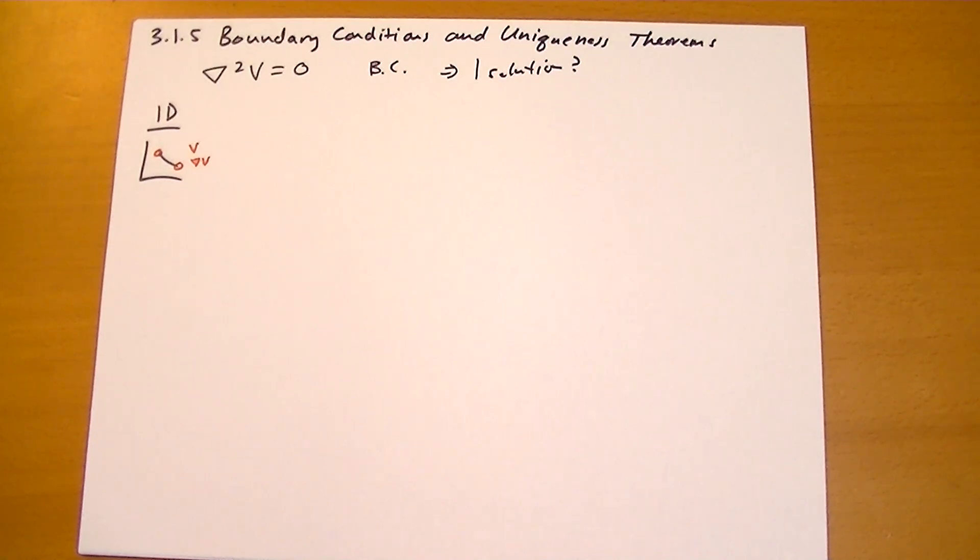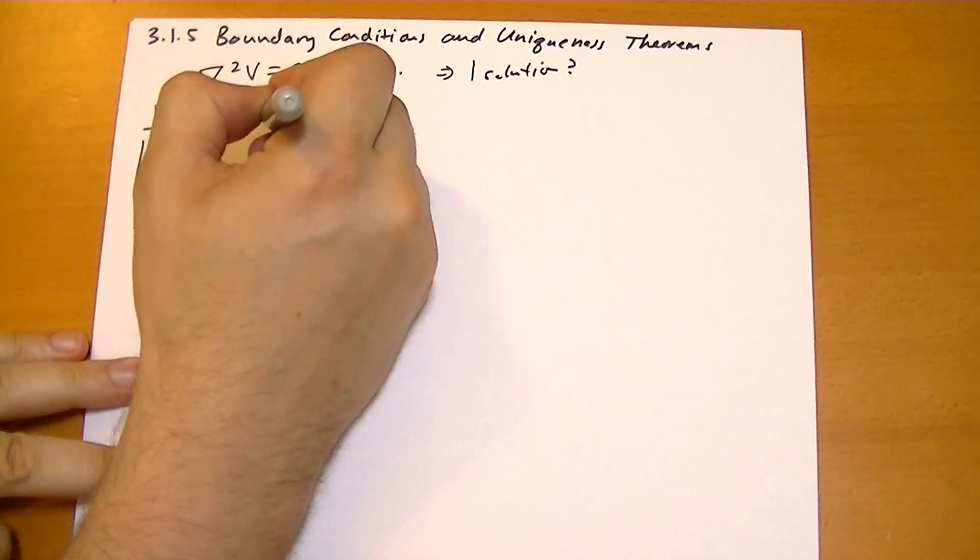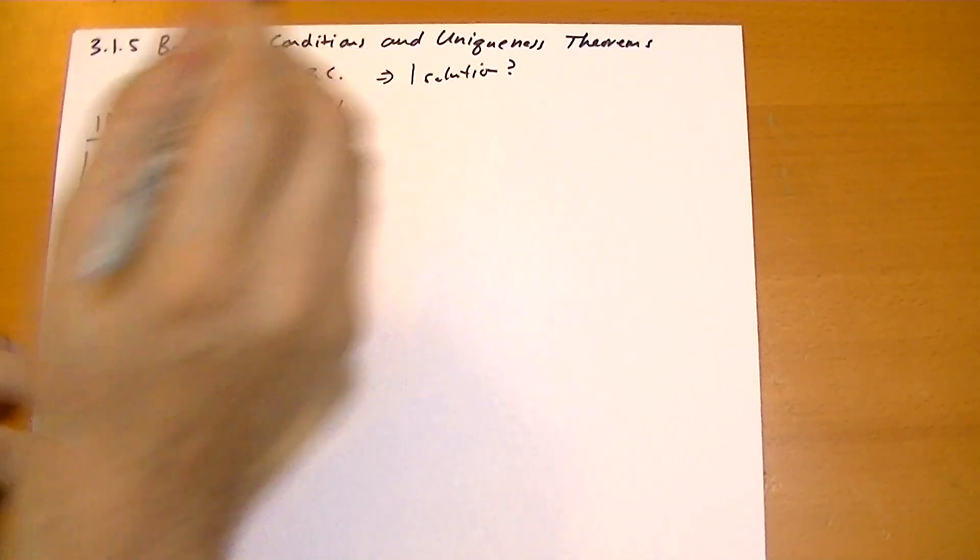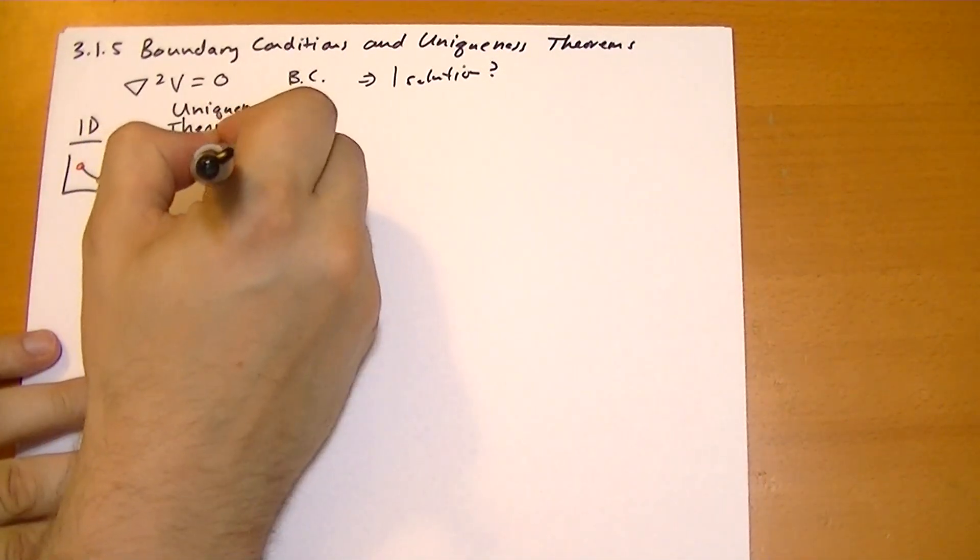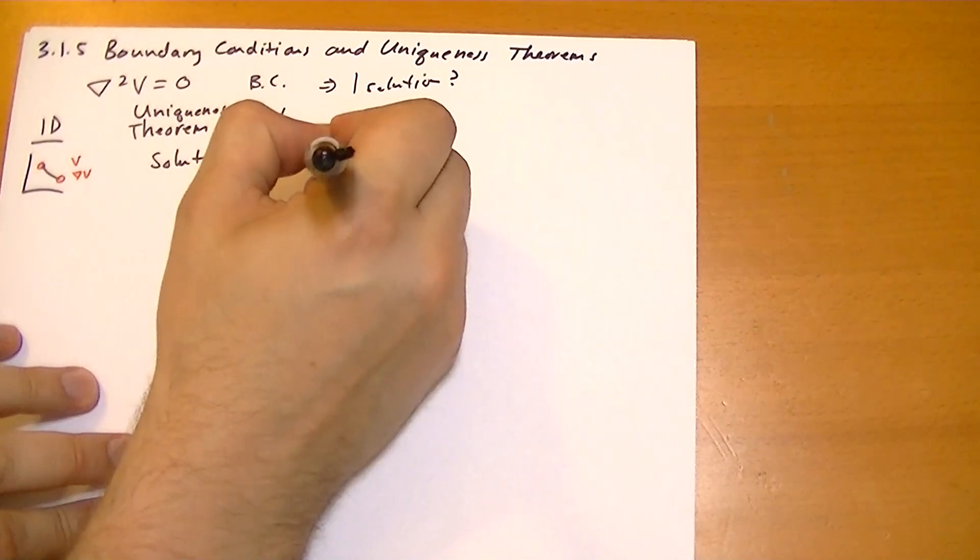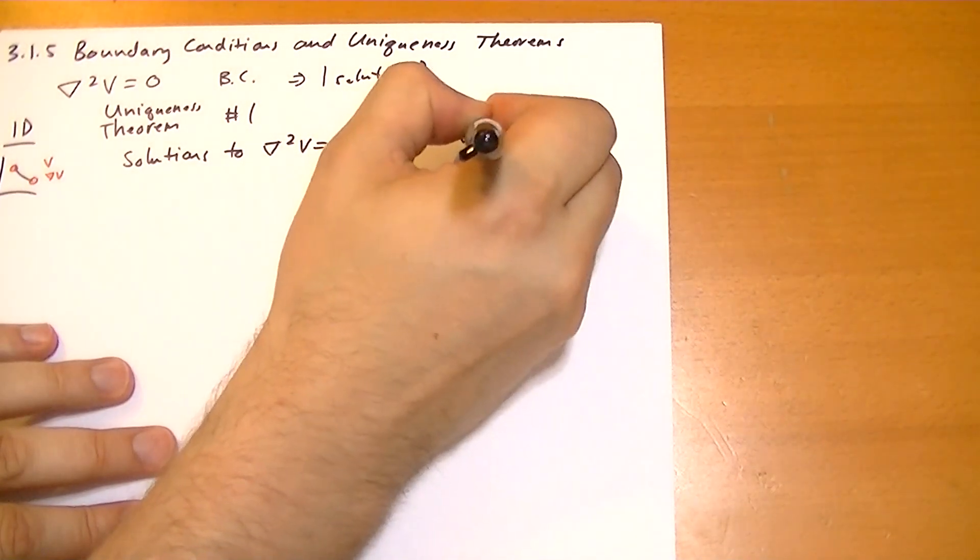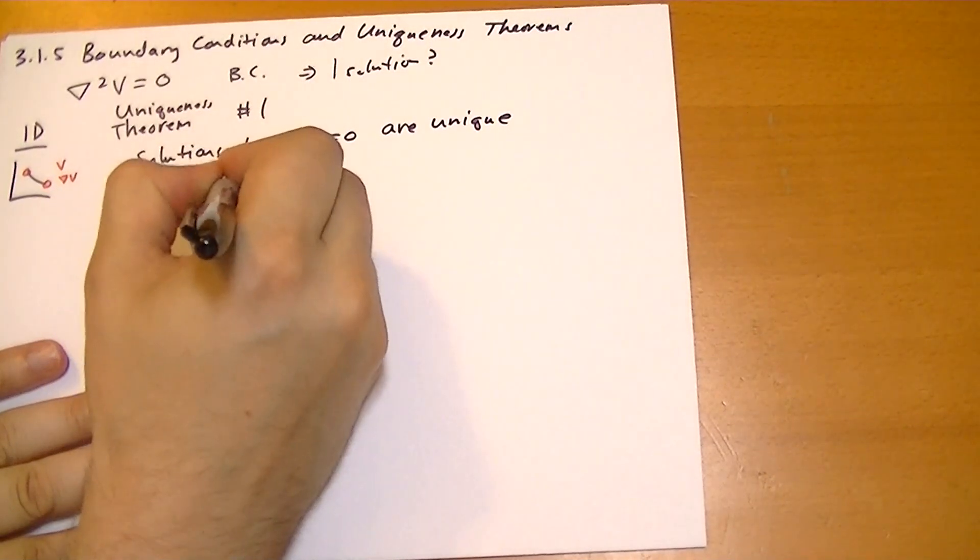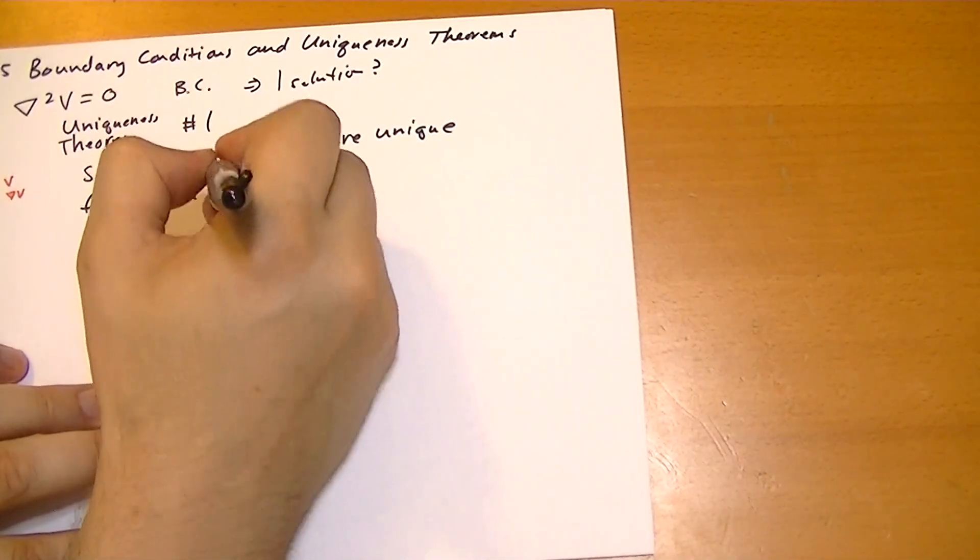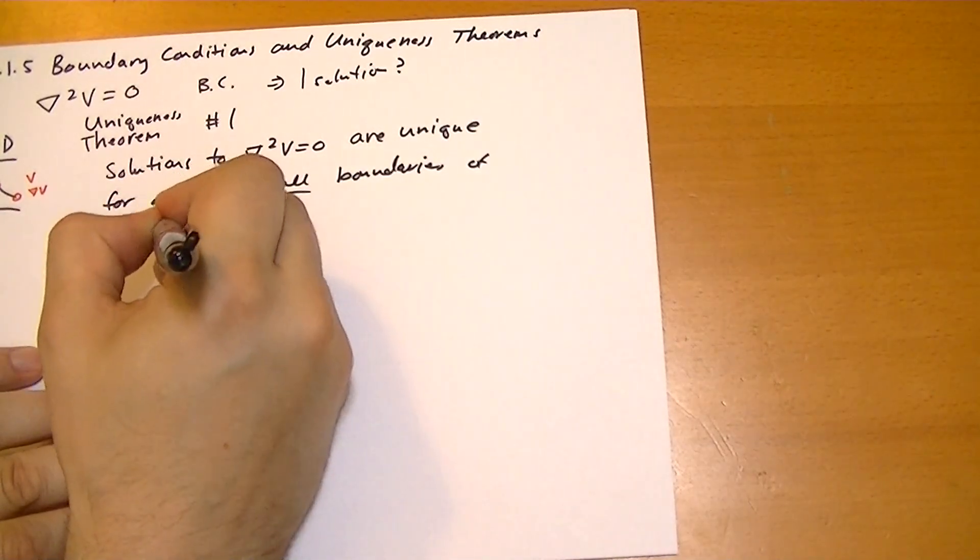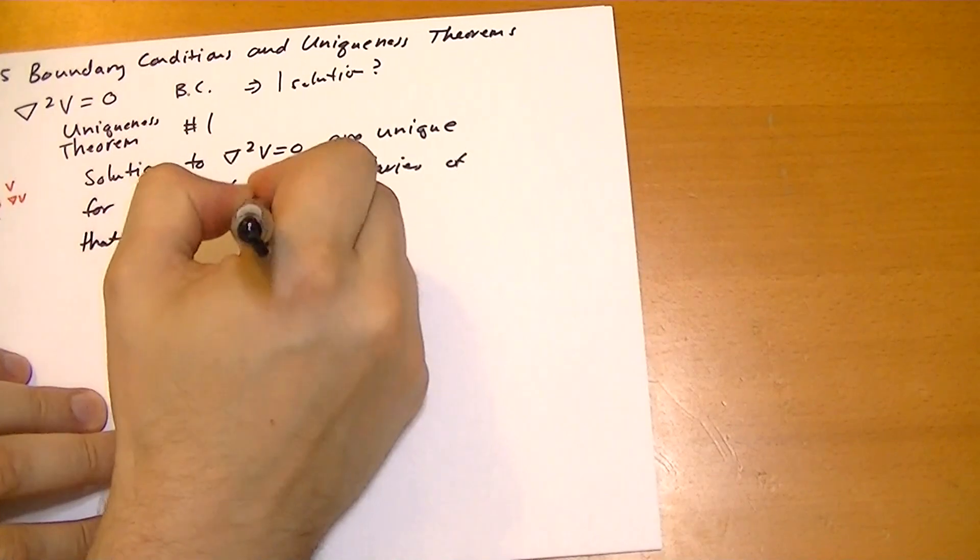In multiple dimensions, the uniqueness theorem says that solutions to the Laplacian are unique for a region if all boundaries of that region have V given.